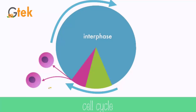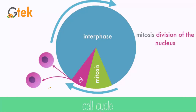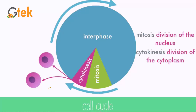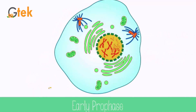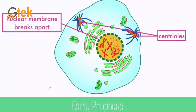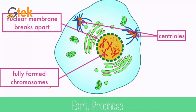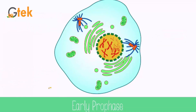In the cell cycle it contains three parts: the first one is interphase, another one is mitosis — which is the division of the nucleus — and cytokinesis, which is the division of the cytoplasm. You can see over here how the cell cycle works. This phase is called early prophase. It contains the centrioles and nuclear membrane, and inside the nuclear membrane it has chromosomes.